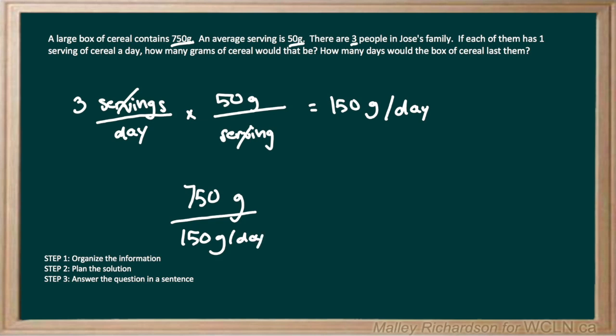Another way of writing out this problem is to write it as a multiplication problem. So we had 750 grams. And we're going to multiply it by the reciprocal of 150 grams per day. And as we can see, our units of grams cancel out. And we're just left with our units of days. And 750 divided by 150 gives us 5 days.